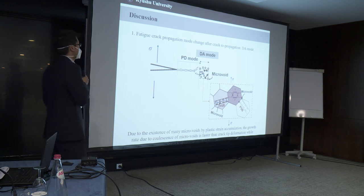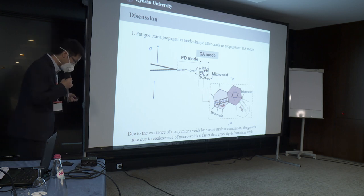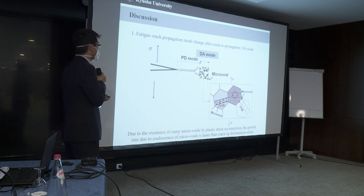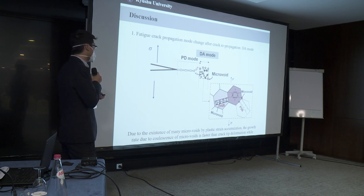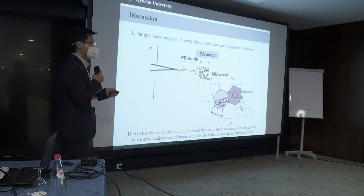So according to the results, I'd like to give two points in the discussion. The first, the crack propagation mode changed after crack repropagation is from the PD to the DA mode. And the reason I think that's the DA mode is due to the existence of many micro voids that already exist by the plastic strain accumulation. The growth rate due to the coalescence of the micro voids is faster than the crack tip deformation. So at this time, the DA mode is dominant.